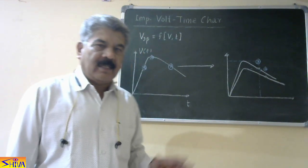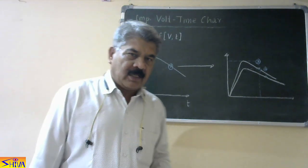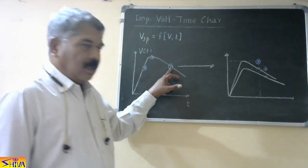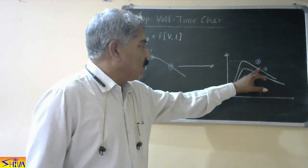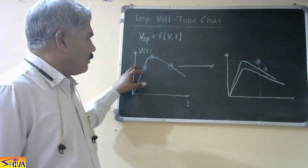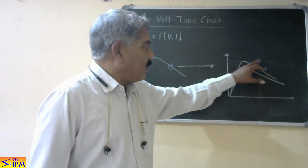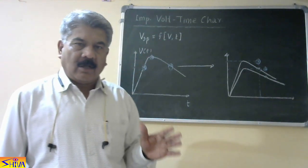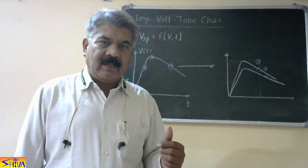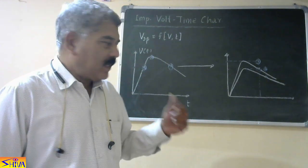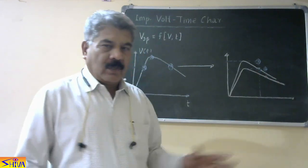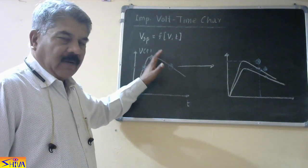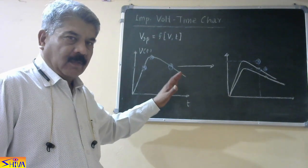Third possibility: spark over takes place at the wave tail — the decaying portion of the impulse voltage wave. In that case, we do not take the actual point directly; instead, we draw a vertical line from that point and a horizontal line from that point. Where these two lines meet, that is the point we take on the characteristic for wave tail spark over. In this way we obtain a few points on the wave front, a point on the peak value, and a few points on the wave tail, and we join them by a smooth curve.